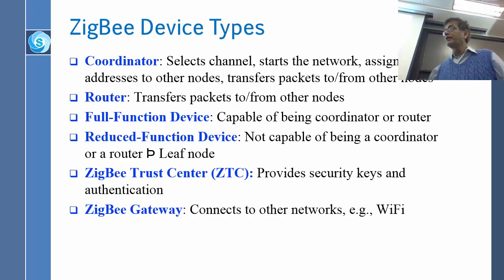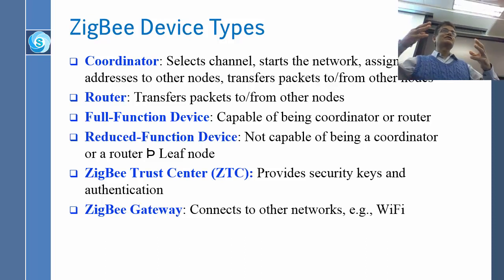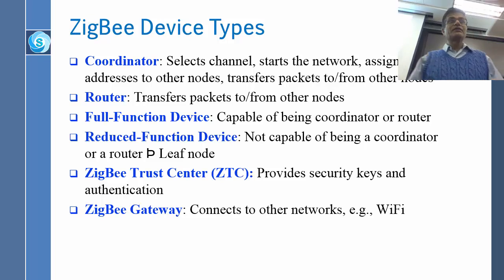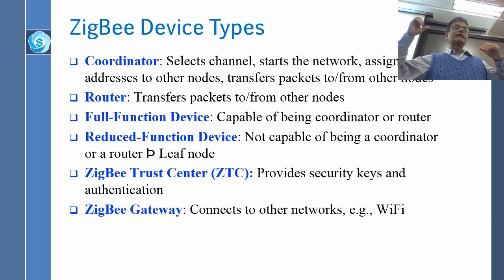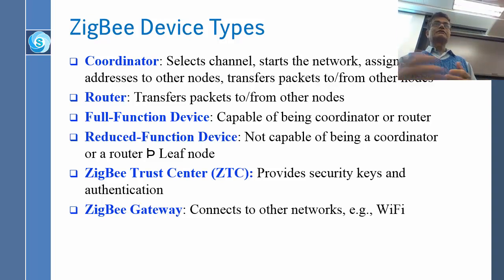Device types: the Coordinator selects the channel, starts the network, assigns short addresses to other nodes, and transfers packets. Routers transfer packets similarly but don't perform the other coordinator functions — coordinator is a superset of routers. Full Function Devices (FFD) can become routers or coordinators. Reduced Function Devices (RFD) can only become leaf nodes. The Zigbee Trust Center is a security center — independent of the coordinator — that keeps all keys and certificates. A gateway connects the Zigbee network to other networks like Wi-Fi, Bluetooth, or wired networks.